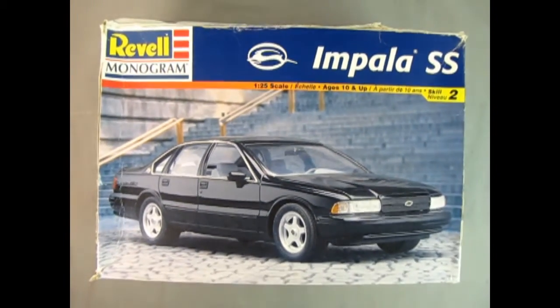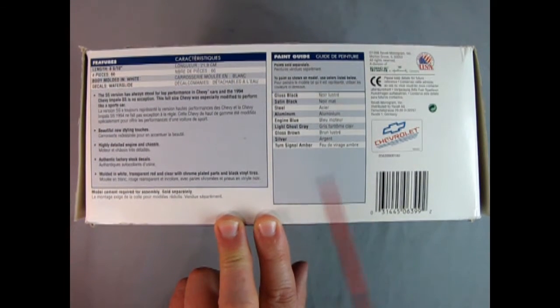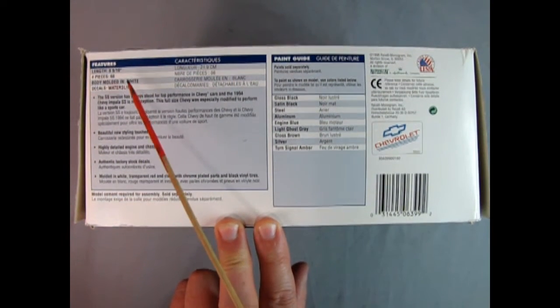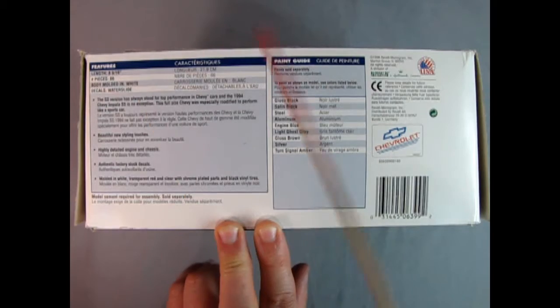Now we're going all the way back to 1996 as we check out Revell Monogram's 1996 Chevrolet Impala SS. On this side of the box we can see the skill level rating. This is a skill level 2 kit for ages 10 and up. Will require glue and paint. Here we have an upper rear three-quarter shot of our back end of our car. There's that Illinois license plate in there. And here we have underneath the hood and you can see all the great detail including where the decals go. On this side of the box we can see all the wonderful write-ups for the car. It is eight and nine sixteenths inches long, 66 pieces, body molded in white and has water slide decals.